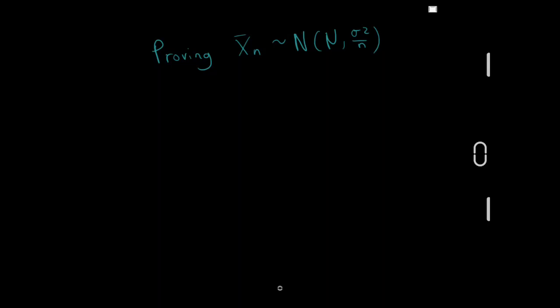Welcome, everyone. My name is Ansar. I am your helping hand — I promise it will get less cheesy. Today we're going to be doing a proof video. Specifically, we're going to be proving that the sample mean of normally distributed data is still normal with the same mu and a variance of sigma squared divided by n. Before we get into the actual proof, I want to talk about some prerequisites.